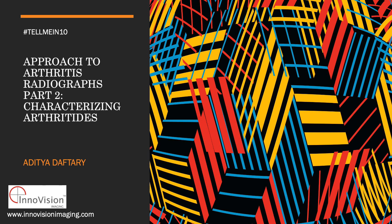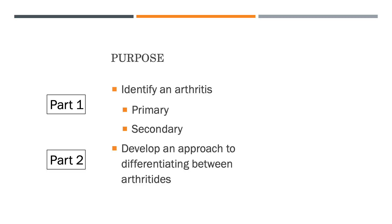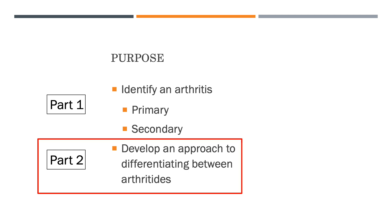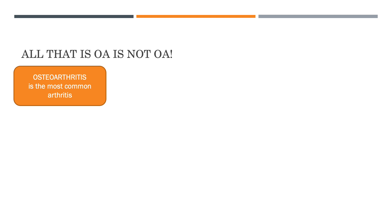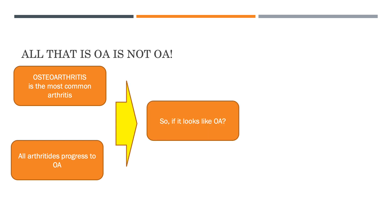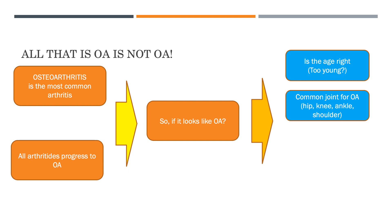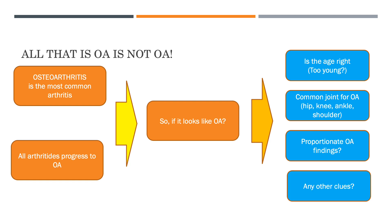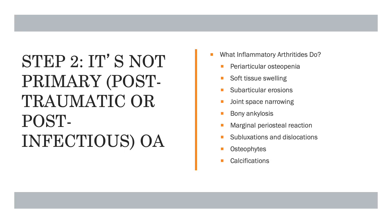This is the next of our talks in the 'Tell Me in 10' series - the second of a two-part talk on the approach to arthritis radiographs. The first part was about identifying arthritis; today we focus on differentiating between the types. We noted that osteoarthritis is the most common form, all arthritis will progress to OA, so you need to consider age, joint, proportionate findings, and any other clues before calling it secondary osteoarthritis.